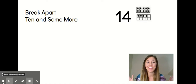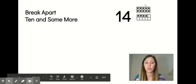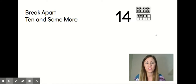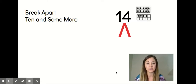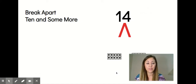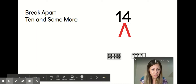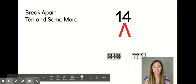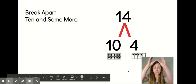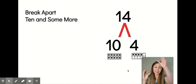Great job practicing putting tens and ones together to make those teen numbers. Now we're going to practice breaking apart a teen number. Think about the number 14 on your screen — there's one group of 10 and four extra ones. When we put those together, that makes 14. If we want to break apart 14 into the tens and the extra ones — sorry, my picture was blocking it — if we break it apart, we have our 10 over here and our extra ones over here. So our 10 and our 4. Say it with me: 14, 10 and 4.